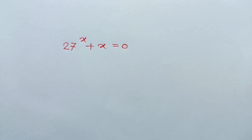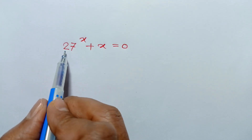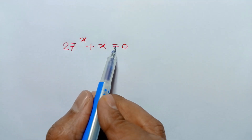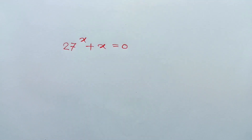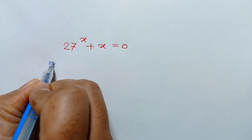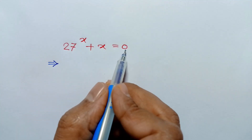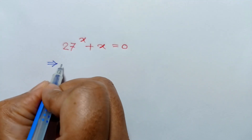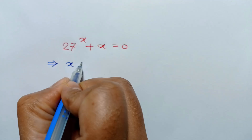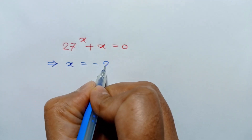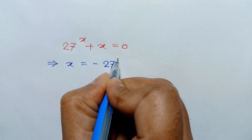Hi everyone, in this video I am going to show how to solve 27 to the power x plus x is equal to 0. Taking 27 to the power x to the right side, we will have x is equal to negative 27 to the power x.